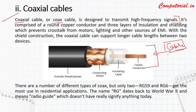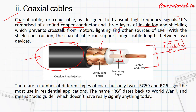In these cables, we have a central core. There is a plastic jacket, an insulating material, an aluminum or copper jacket, another insulating material, and on top of it an outer insulated jacket. It is comprised of a round copper conductor and three layers of insulation and shielding, which prevents cross-talk from motors, lightning, and other sources of EMI — electromagnetic interference.